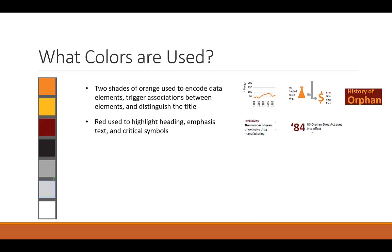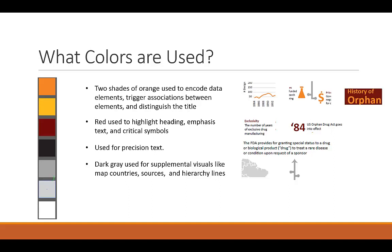Red is used exclusively to highlight critical symbols on the map and headings inside the text. Black is used exclusively to provide precision text and additional explanations for elements when required.